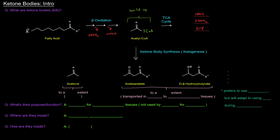So I've answered that first question: what are the ketone bodies? These three guys. During ketone body synthesis or ketogenesis, these three are made. Acetone is made to a lesser extent than acetoacetate and D-beta-hydroxybutyrate, which are made to a greater extent.